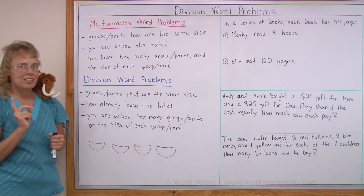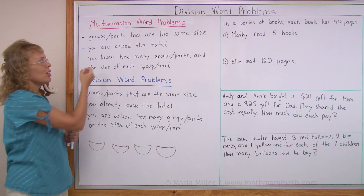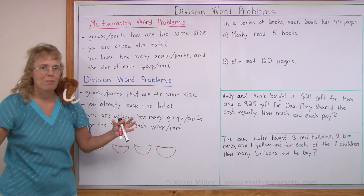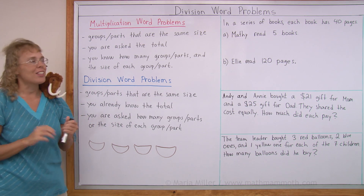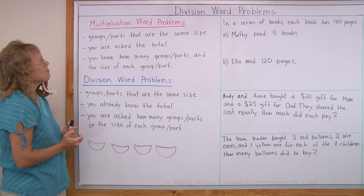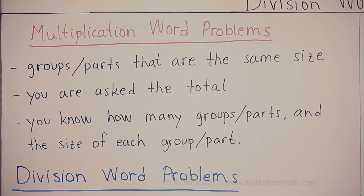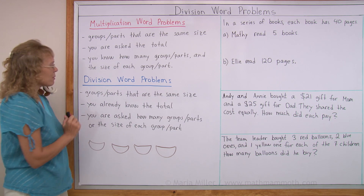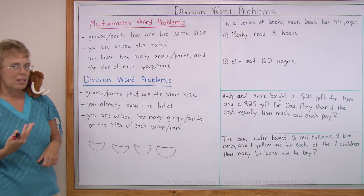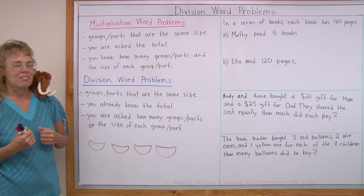There's a difference in that in multiplication problems you're asked the total — you don't know how many in total. But in division problems you already know how many in total. In multiplication problems you would know how many groups or parts you have, and how many in each part or the size of each part. In division word problems you are either asked how many groups or parts, or you are asked the size of each group or each part.